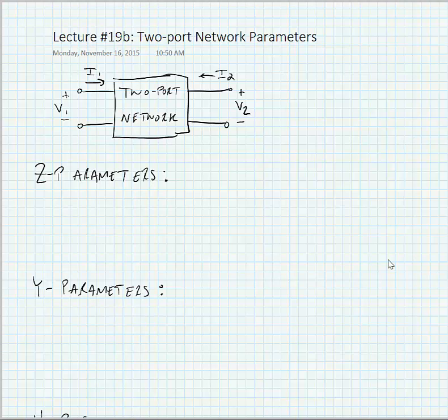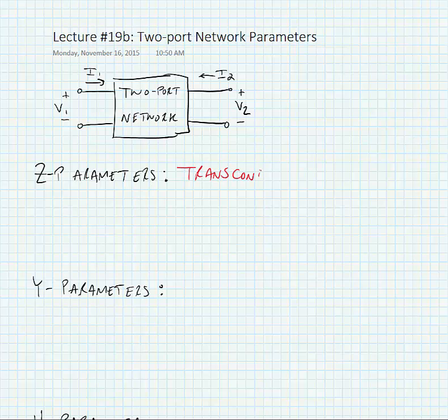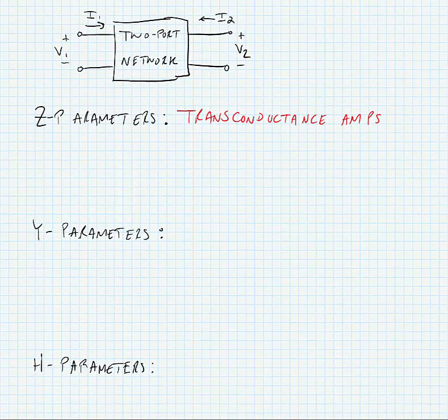We'll use four different types of feedback parameters, starting with Z parameters. Z parameters are the most common parameters, and they are used for transconductance amplifiers. Remember, transconductance amps are amplifiers that have an input voltage and an output current. So what we're going to do with a transconductance amplifier for feedback is sense of current at the output and feedback of voltage. That's why we'll use Z parameters.